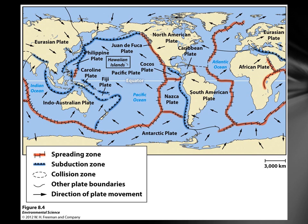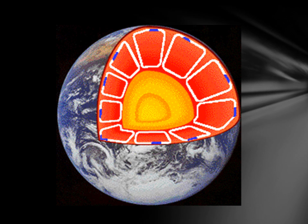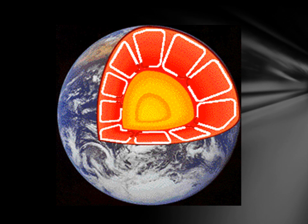The continents aren't floating about like rafts on the ocean. Rather, we have about seven major tectonic or lithospheric plates that are floating on top of the mantle, moving in different directions and at different speeds. This leads to some pretty interesting things we're going to talk about. So let's look at what actually moves those plates.